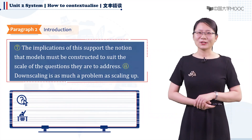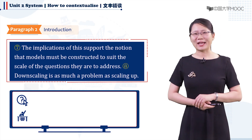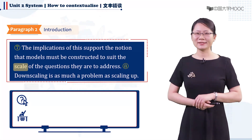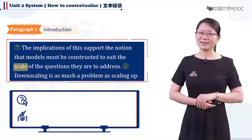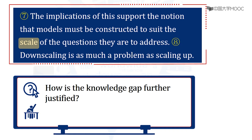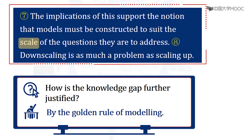Sentences seven and eight go on to further explain why there is a knowledge gap for the scale of modeling: 'The implications of this support the notion that models must be constructed to suit the scale of the questions they are to address. Downscaling is as much a problem as scaling up.' Sentence seven echoes sentence one by restating the golden rule of modeling, which proves that the knowledge gap needs to be addressed. Sentences five to eight work together to justify the research purpose by proposing and explaining the knowledge gaps, which also highlights the research significance.